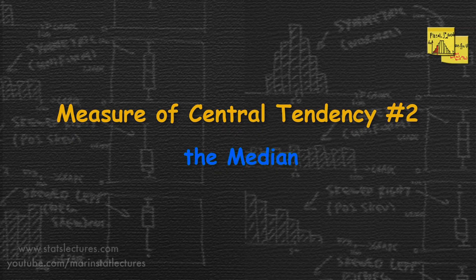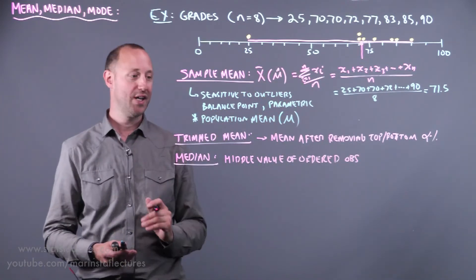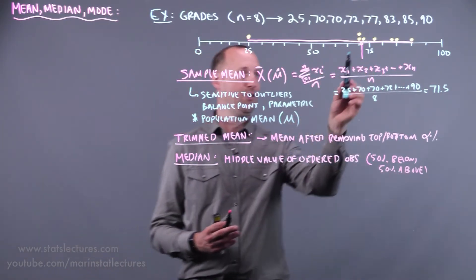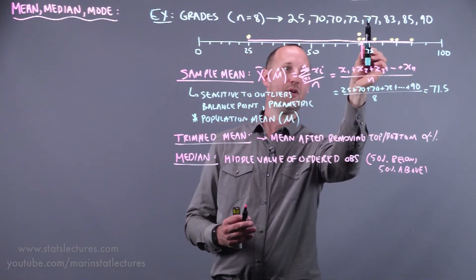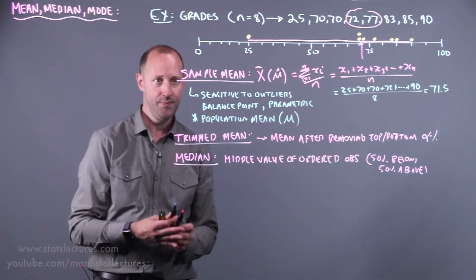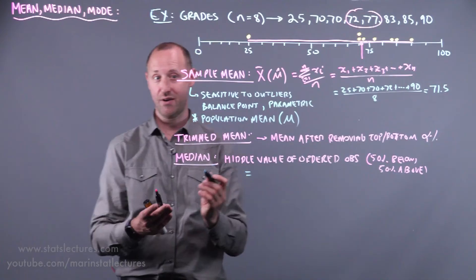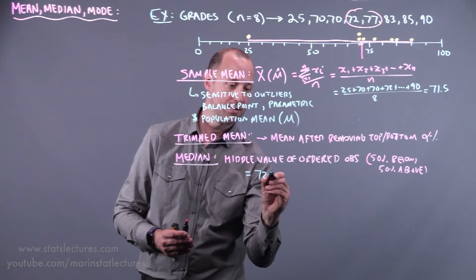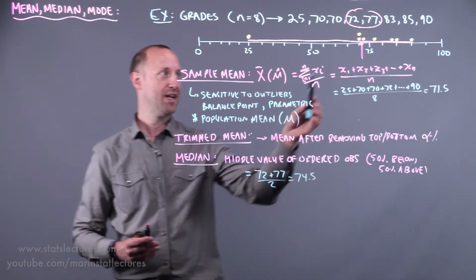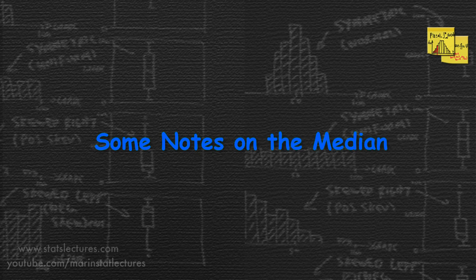The next measure is the median. This is the middle value of the ordered observations. What value cuts the data in half? 50% below, 50% above. We can see, if we look at these data here, the median is going to be somewhere in here, cuts it 4 below, 4 above. Somewhere in between the 72 and the 77. If our data set has an even number of observations, what we're going to do is take the two that are sharing the middle space and average them. So the 72 plus 77 divided by 2, 74.5. Because the point that cuts the data in half is somewhere between the 72 and the 77.